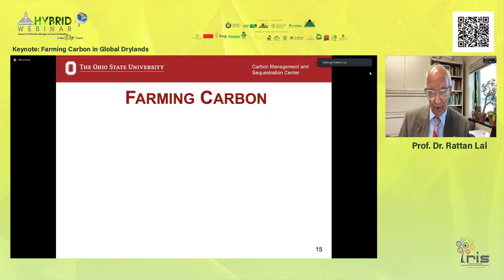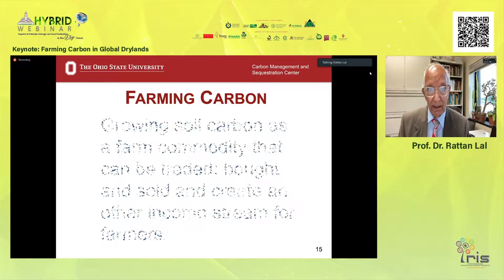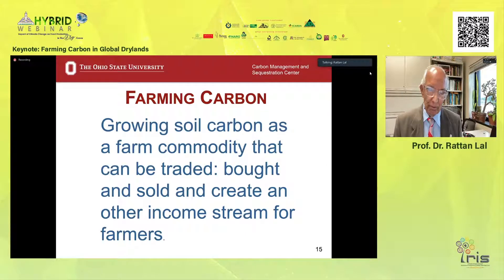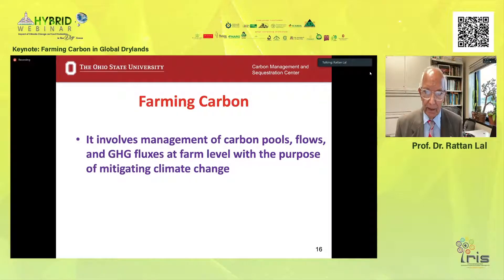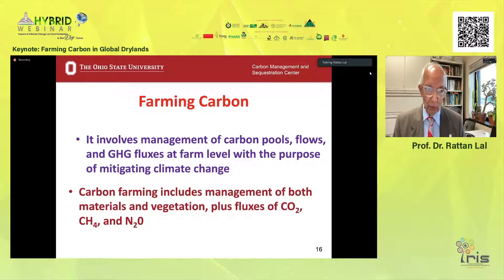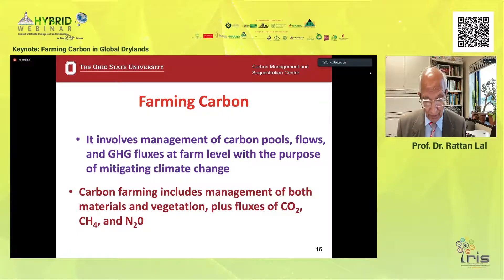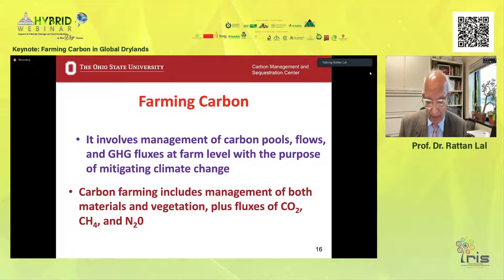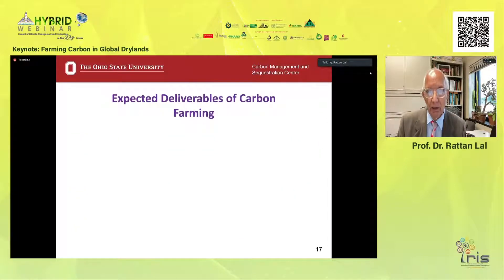What does farming carbon mean? Growing carbon in soil, just like we grow any other commodity like wheat, barley, cotton, or soybean — as a produce that can create another income stream for farmers. Creating another income stream by trading carbon like we trade other farm commodities — that's farming carbon. Farming carbon involves management of carbon pools, flows, and greenhouse gas fluxes at farm level, with the purpose of mitigating climate change. Carbon farming includes management of both materials and vegetation, plus fluxes of three critical gases: carbon dioxide, methane, and nitrous oxide. Nitrous oxide is very important because if fertilizer use efficiency is low, it is emitted into the atmosphere with a global warming potential 310 times more than that of carbon dioxide.